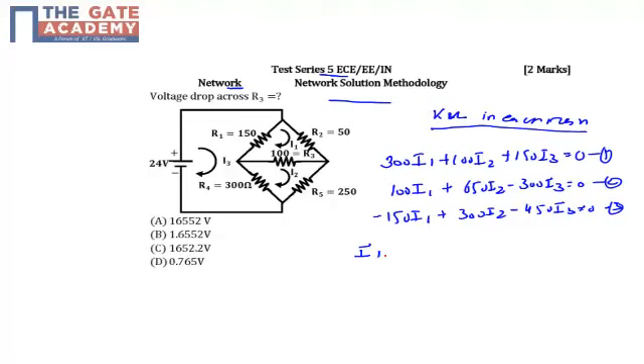So we will get the value of I1 as minus 93.793 mA. Then you will get I2 as 77.241 mA. You will get I3 as 136.092 mA. So just find out the IR3.